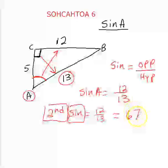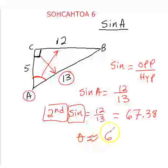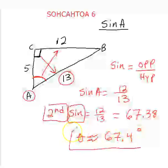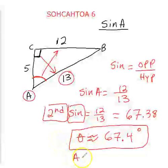I was able to get 67.38, so theta, rounding it up, approximately will be 67.4 degrees. So that is the sine of A. A is equal to 67.4 degrees.